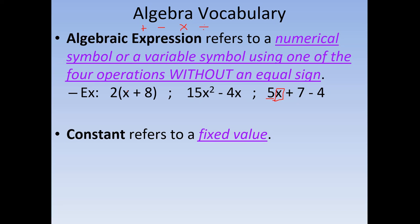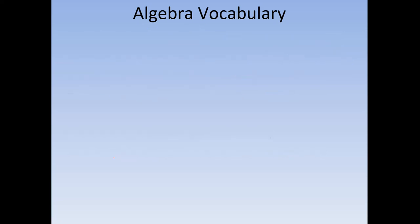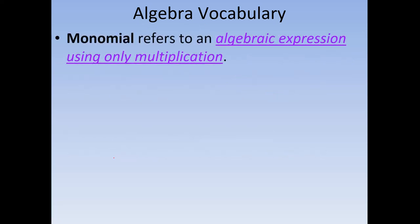Constant refers to a fixed value. Going back to our Algebraic Expression examples, all the numerical numbers are constants essentially, because the 2 is representing a constant value — it's the same regardless.